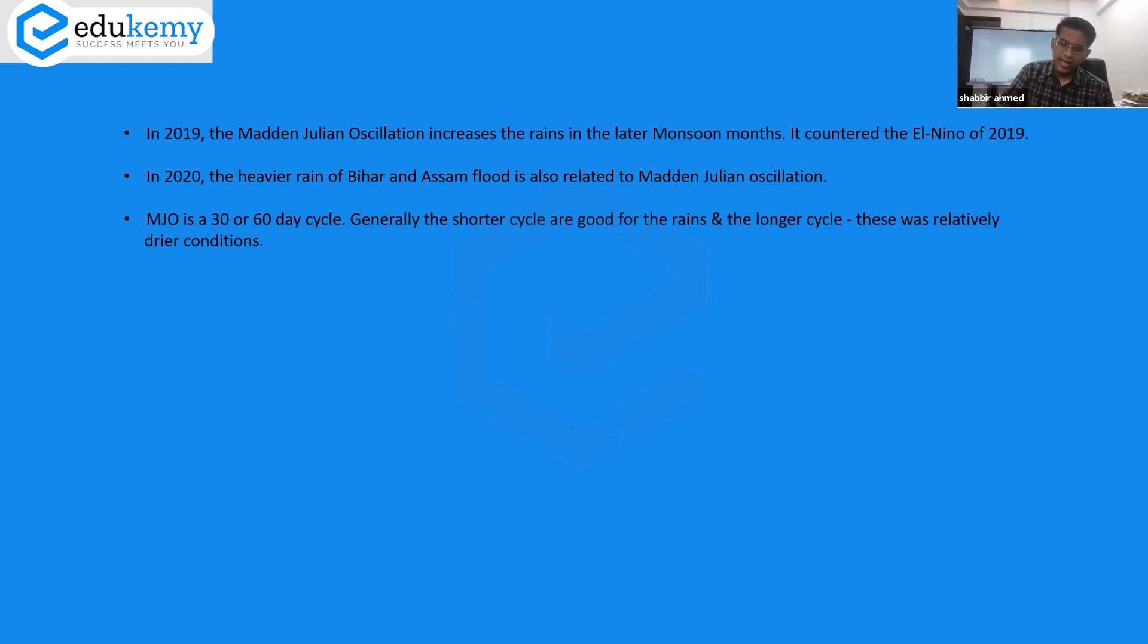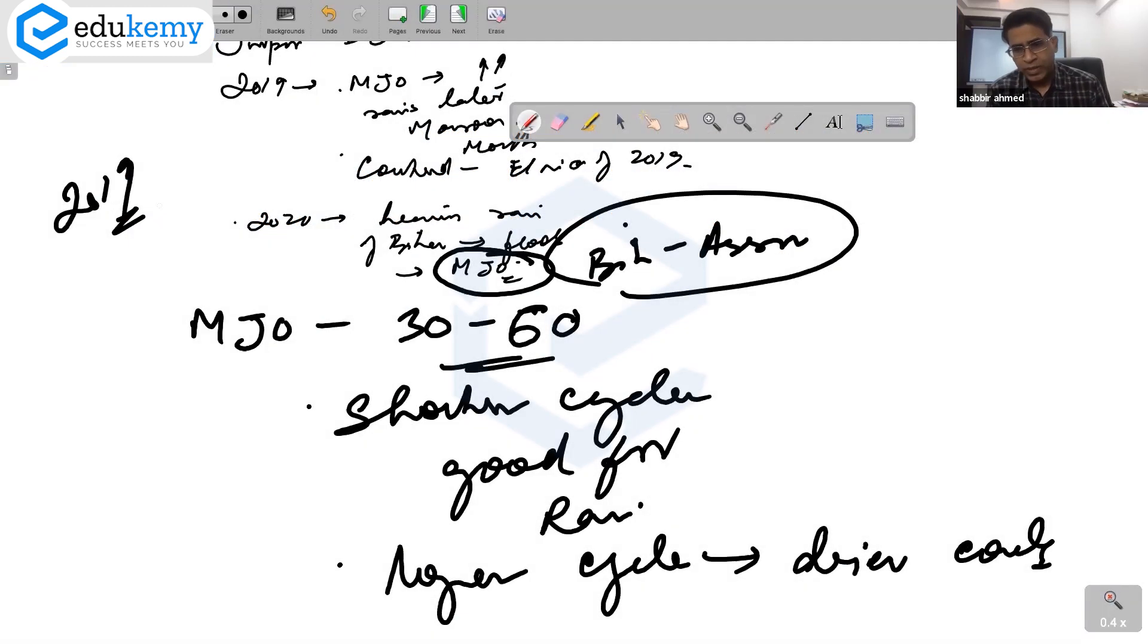2020 is impacted by MJO in Bihar and Assam. 2019 was an El Nino year, and MJO impact was also responsible for more rains. The MJO is able to counter the impact of the El Nino. That's the point here.